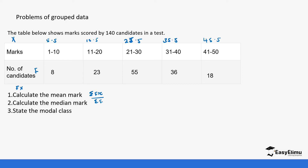Now we need to get the value of fx, so I'll introduce another column for fx. fx is x times f: 5.5 times 8 gives 44, and 15.5 times 23 gives 356.5. Then 25.5 multiplied by 55 gives 1402.5. Then 35.5 times 36 gives 1278. Finally, 45.5 times 18 gives 819.